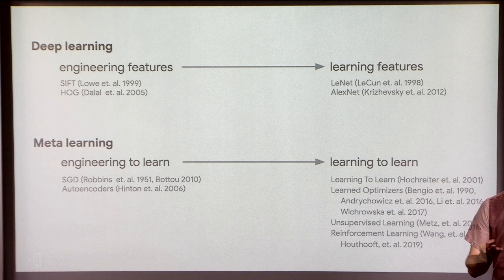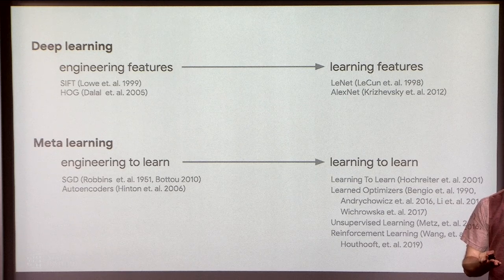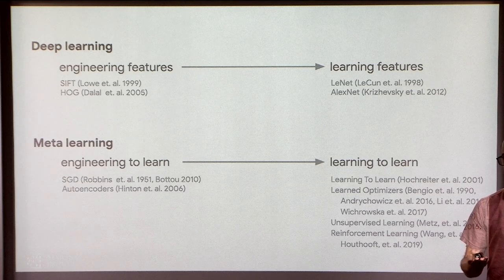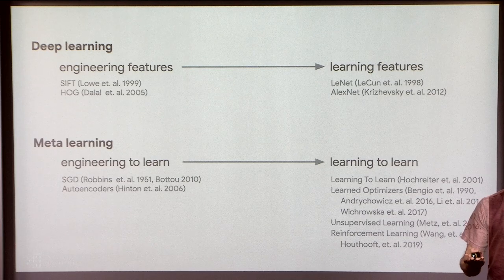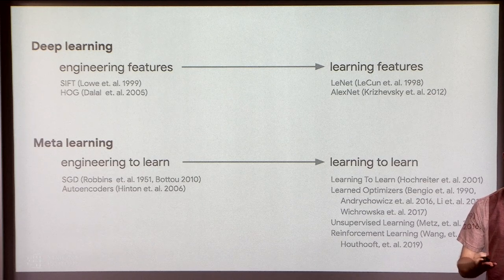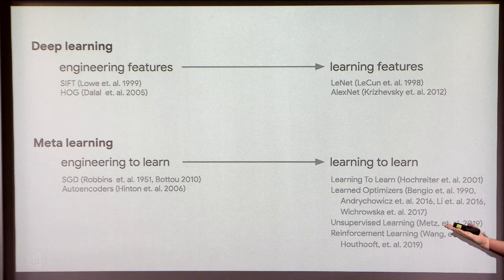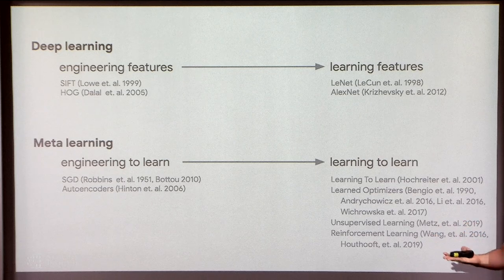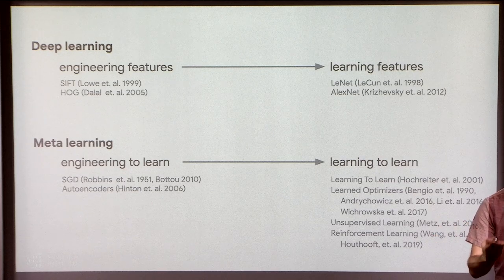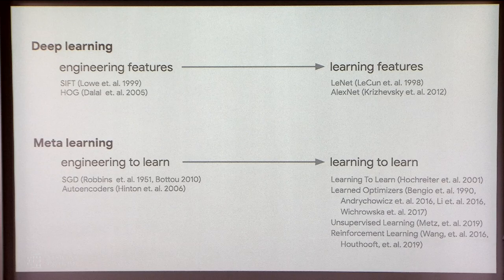Even in the case of classification, what we usually care about is something like 0-1 loss on a test set, but what we typically train on is cross-entropy loss on a training set. So we're doubly mismatched even on the most basic machine learning problem — both in terms of dataset and loss function. What we hope to do with meta-learning is transition to loss functions and update rules that are themselves learned.